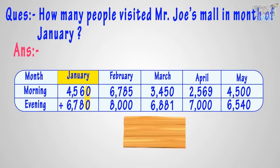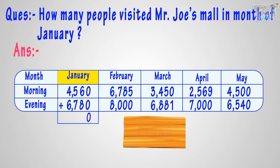Adding 0 plus 0 equals 0, so write 0 in the sum below the 1's place. Adding 6 plus 8, we get 14. So write the 1's place digit, that is 4, in the sum at the tens place, and carry over 1 to the hundreds place.